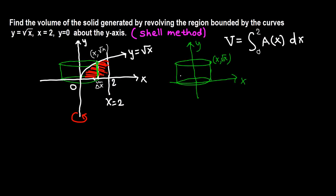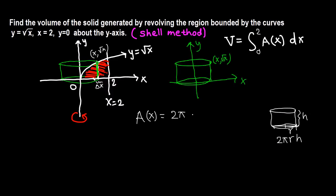We want to find the lateral surface area of this cylindrical shell. The surface area of a cylinder with radius r and height h is 2πrh. In our case, the area A(x) is 2π times the radius times the height. The radius is x and the height is root x, so A(x) equals 2π times x times root x.